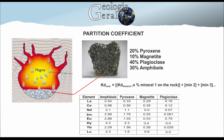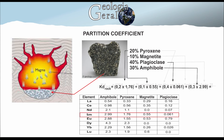The total distribution coefficient for Ce equals the multiplication of the percentage of pyroxene, 0.2, times 1.76, which is the KD value for pyroxene, plus the same process done for the other minerals. So we have 0.1 times 0.55, which is the KD for Ce in magnetite, plus 0.4 times 0.061 for plagioclase, and plus 0.3 times 2.99, which is the KD for amphibol. This equals 1.32, and therefore this element is compatible with the described modal composition.